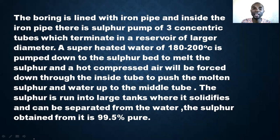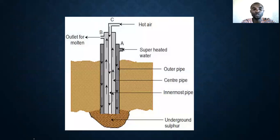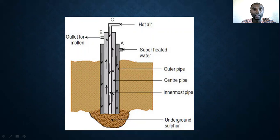In this process, pure sulfur is obtained — anything up to 99.5% is considered pure sulfur. Look at the setup of the extraction of sulfur. You can see where hot air is pumped in through the Frasch process. This is the outlet for the molten sulfur, and this is where the heated water is pumped in.